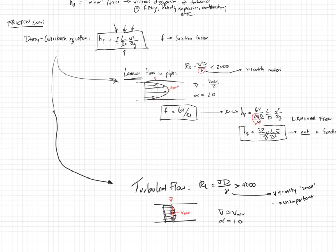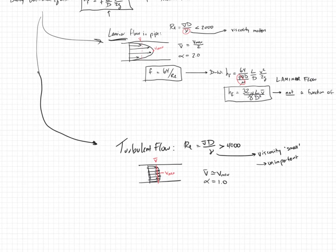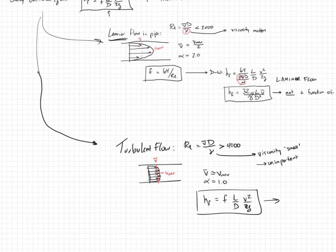In turbulent flow, the head loss due to friction is just the Darcy-Weisbach equation: F·L/D·V²/2g. But F is a little bit more difficult to find — it is a function of several things, which we'll discuss. Before doing that, let's go back and talk a little theory about what goes into becoming the friction factor.